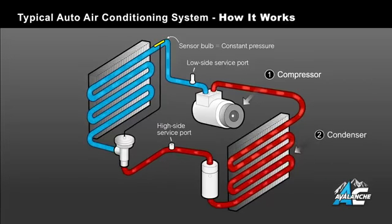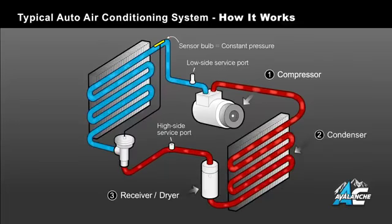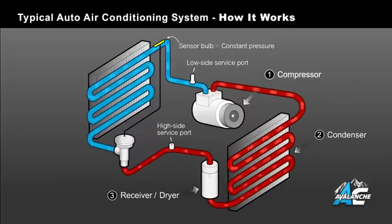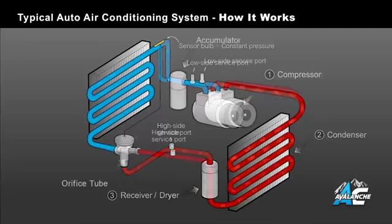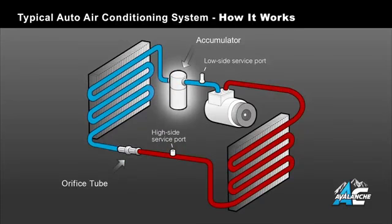The high pressure liquid flows through the receiver dryer, which has a desiccant bag inside to filter and absorb small amounts of moisture that may contaminate the refrigerant. On AC systems using an orifice tube, the receiver dryer is replaced with an accumulator, which is located between the evaporator and the compressor.